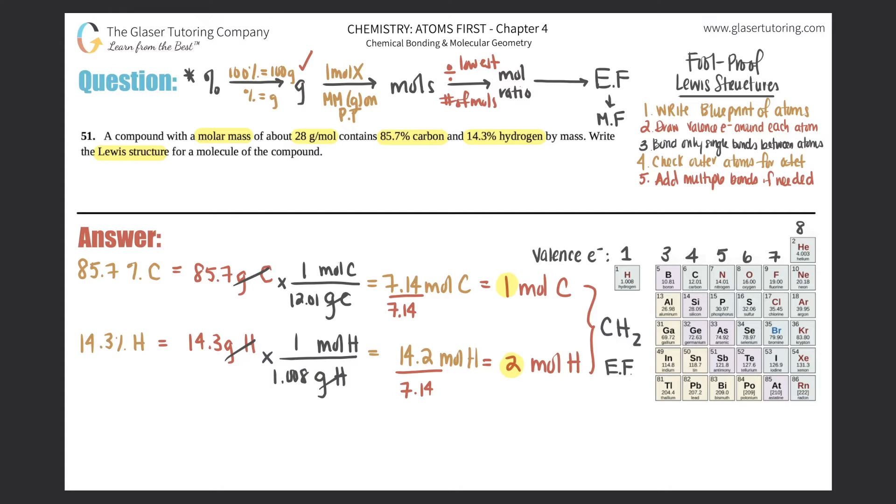Now we have to go from empirical formula to molecular formula because they give me a molar mass. So how do we do that? Well, we have to take our molar mass and divide by our empirical mass - I'm just going to put EM for empirical mass.